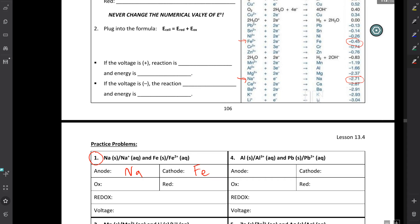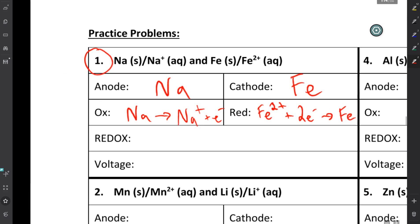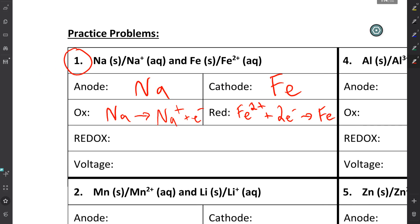And iron therefore is my cathode. Remember the anode and the cathode themselves are the strips of metal. Those metals are in a solution of their own ions. So the oxidation reaction that will take place, I'll start off with Na. I know that I'm going to make sodium ions, Na+, and to balance for charge, I have to include an electron. With the reduction reaction, I start off with my iron 2+. I'm going to gain in this case two electrons to make iron all by itself.